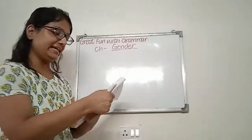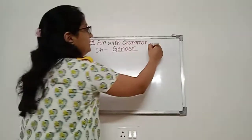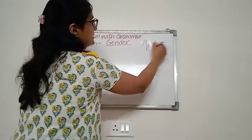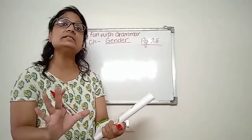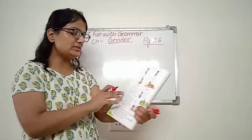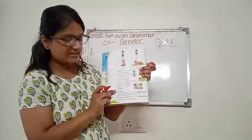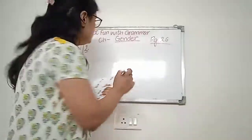Now, the second exercise, which is on page number 26, page number 26. The second exercise is, underline the nouns in the given sentences. Now see, there are many sentences given. We have to underline the nouns. For example,